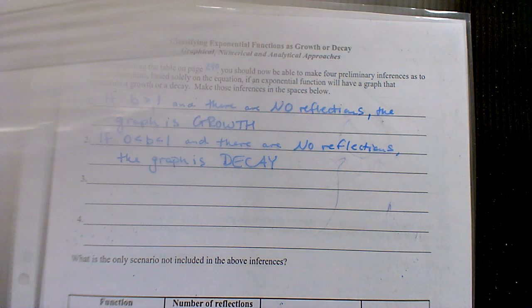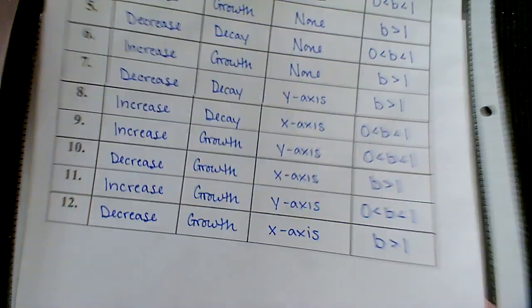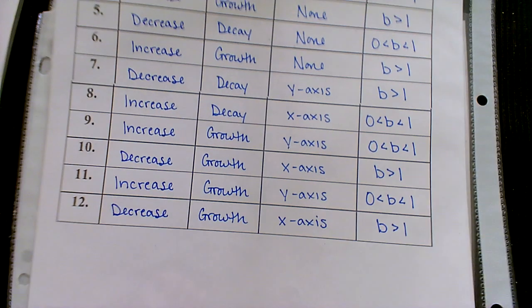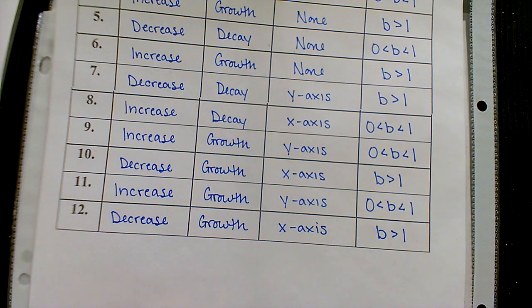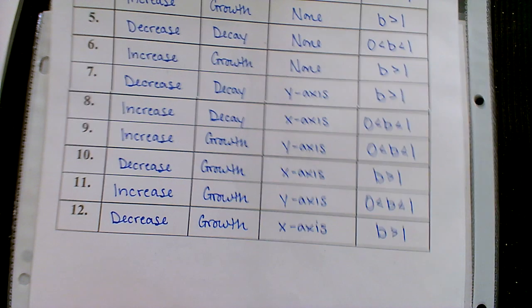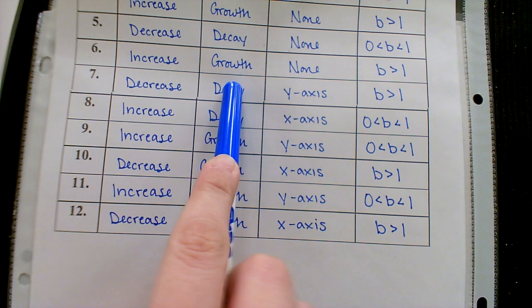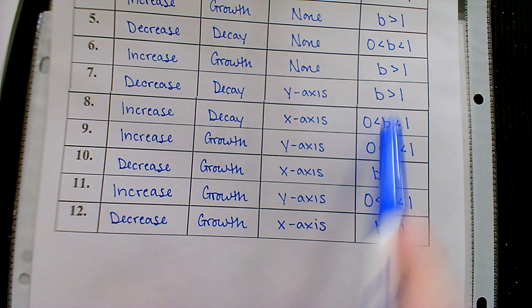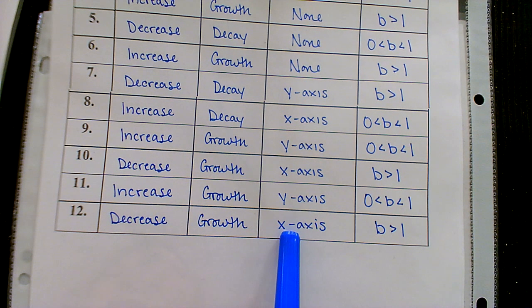Are those kind of obvious when you look at 1 through 6? Those two relationships? Let's try to take a look at 7 through 12 now. This is where it gets a little more interesting, because we are throwing in some reflections. Looking at a connection between growth or decay, what the B value is, and maybe if you have a reflection.